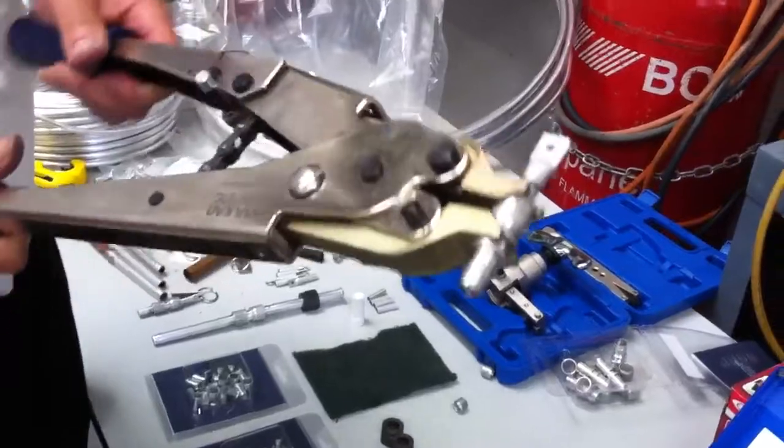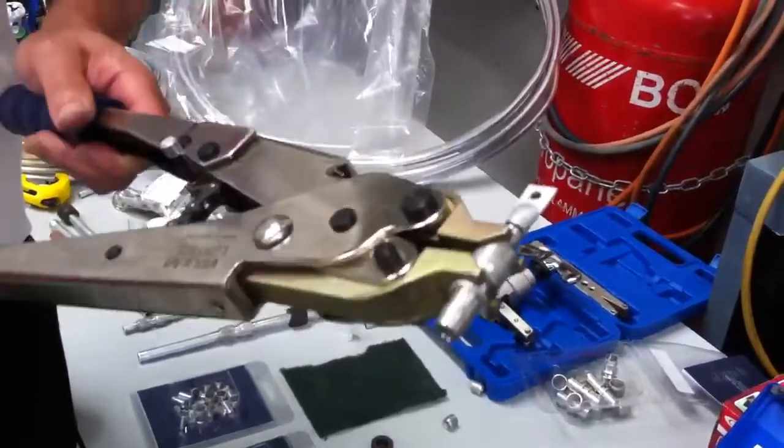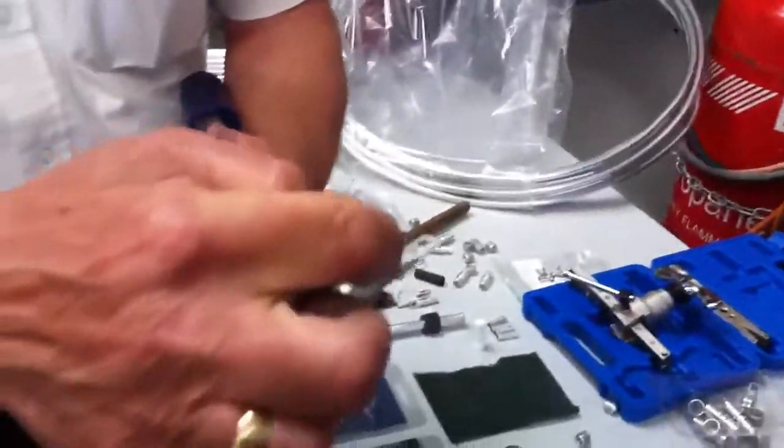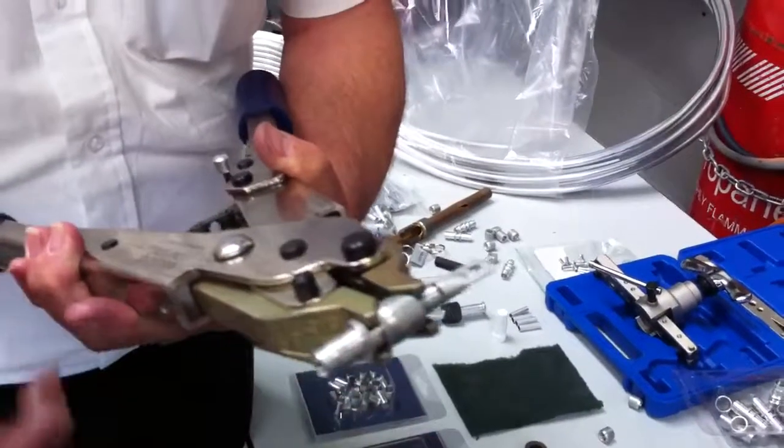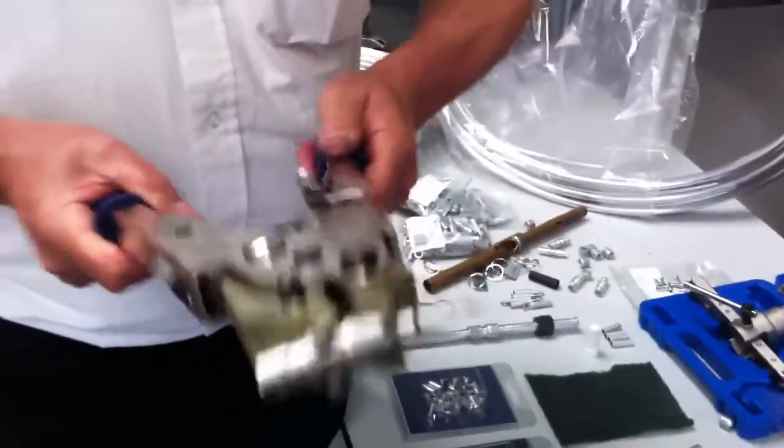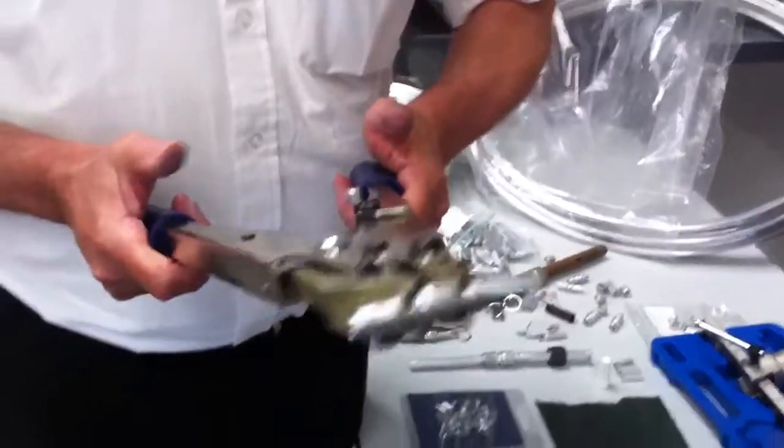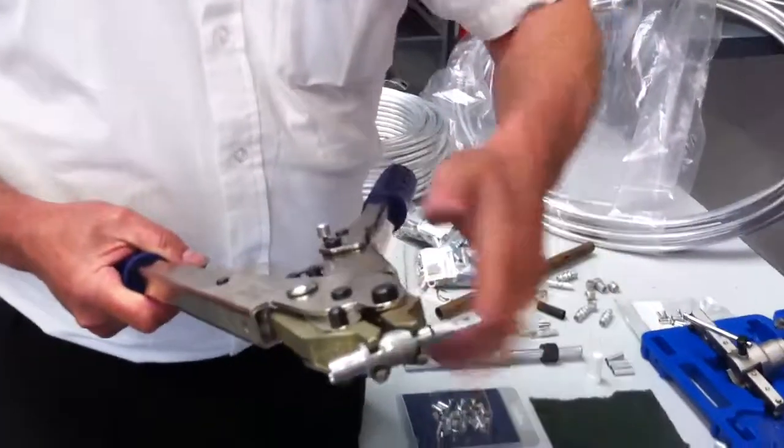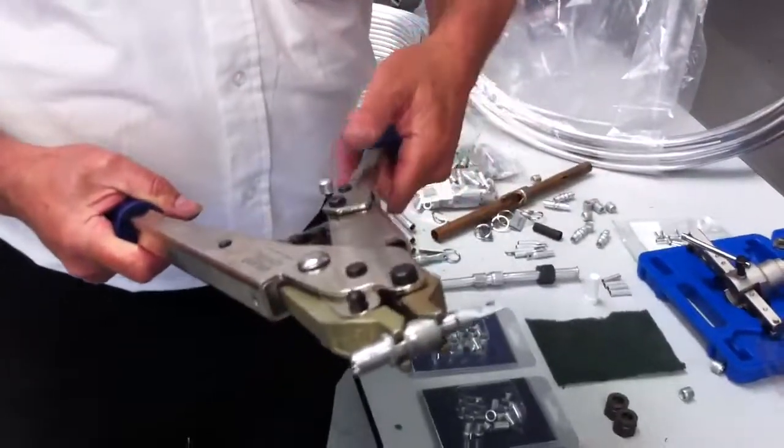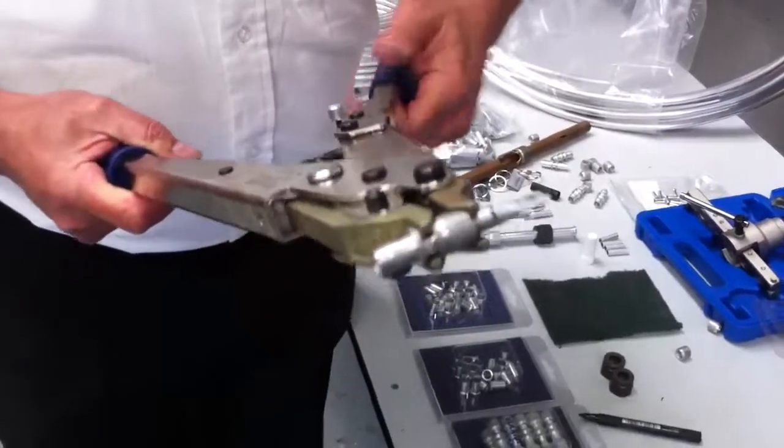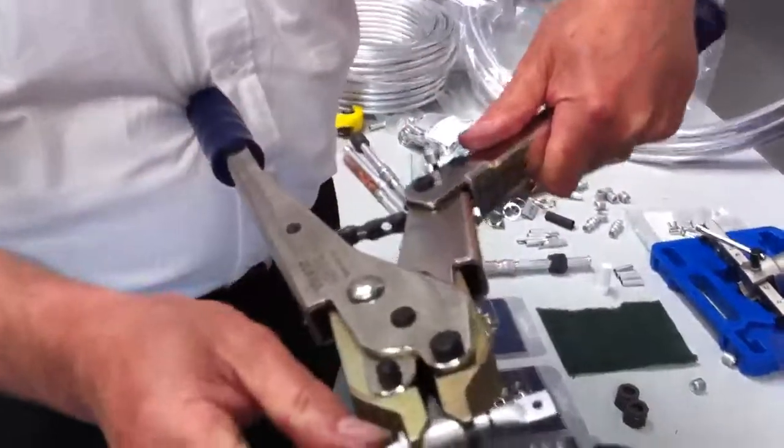As we apply pressure to the tool, the collar slides along the fitting body until it hits this shoulder stop in the middle. That's it. You feel spring resistance in the tool because you've come to an absolute stop. This is precision engineering, not brute force. Now the joint's complete.